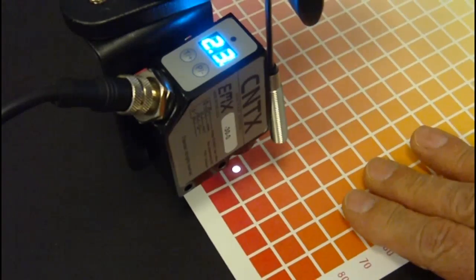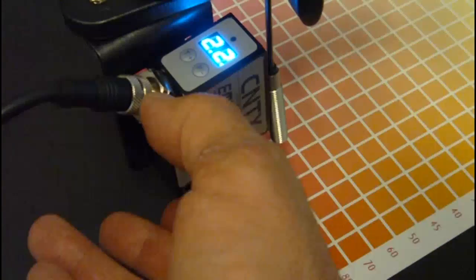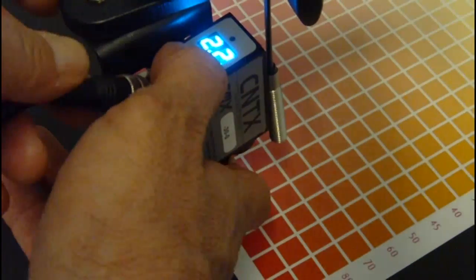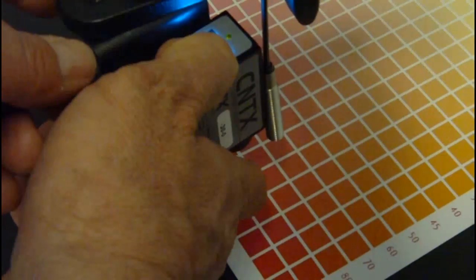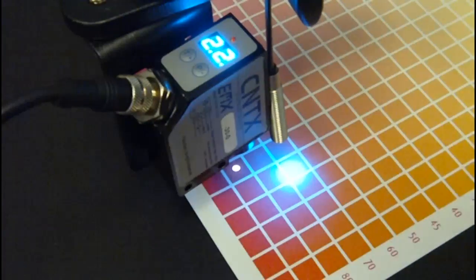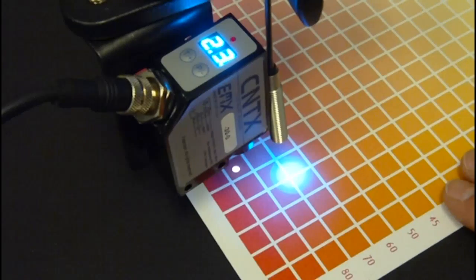We're going to look at the slightly lighter color and we see that it reads 22, 23. So, we're going to set the discrete output or the signal level to trigger at 22. Now you see the output is on and we're detecting the lighter shade.